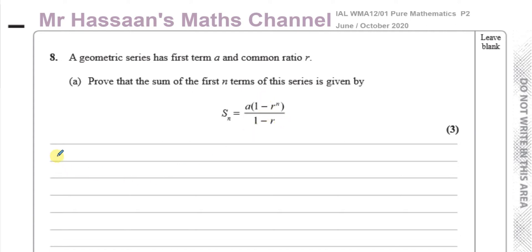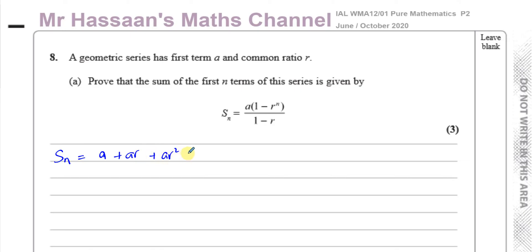To prove this formula, we write down the sum of a geometric series and write down the first few terms. The first term is A. A geometric series is such that you keep multiplying by the same number each time to get to the next term, and that number is called the common ratio R. So the second term is AR, the third term is AR², and so on: AR³, continuing until the last term, which is AR^(n-1).